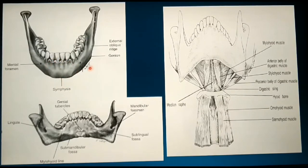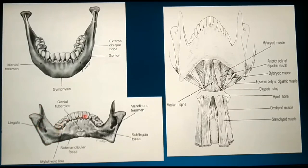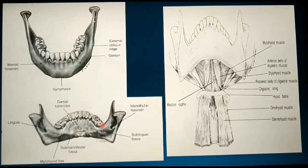Even though the mandible is basically V-shaped, it has been modified to four functional processes: the angle, the coronoid process, the condylar process, and the alveolar process. Now let us discuss each part of the mandible in detail.